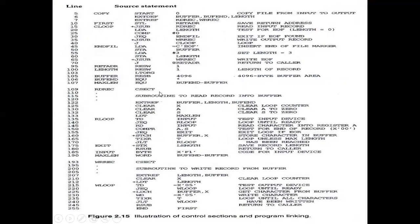For example, 'CSECT' defines a subroutine to read a record into the buffer. This whole code block is used to read the record into the buffer. Another CSECT then defines a subroutine to write a record. So using CSECT means you are defining a subroutine — here for reading data and writing data into the buffer.